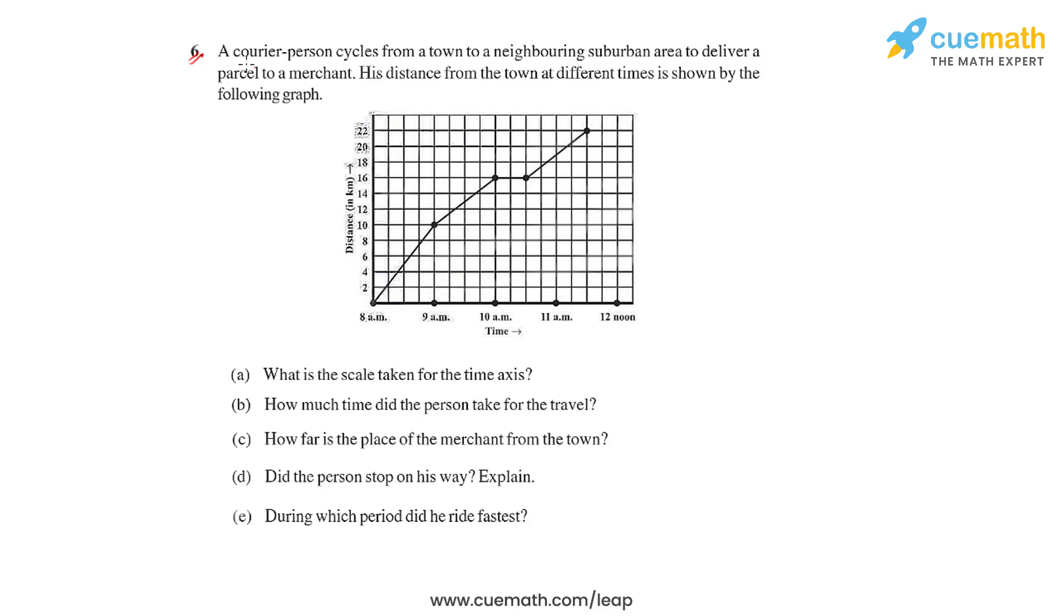In question number six of this first exercise, we have been given a situation where a courier person cycles from a town to a neighboring suburban area to deliver a parcel to a merchant. His distance from the town at different times is shown by the following line graph.